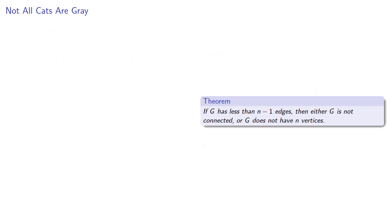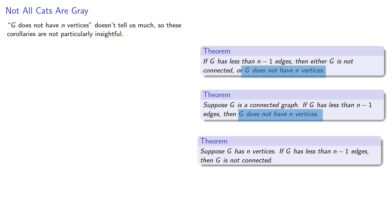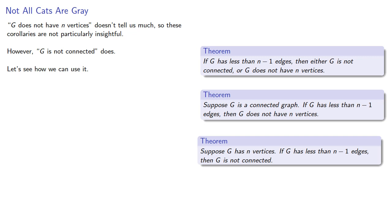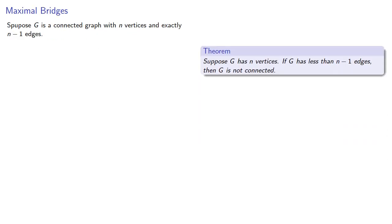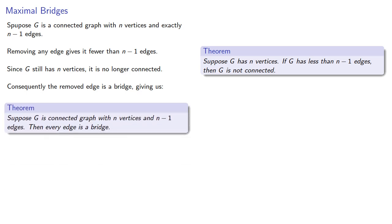While we've found three different contrapositives, they are not necessarily equally useful. In particular, just knowing that g does not have n vertices doesn't tell us much, so those corollaries are not particularly insightful. However, "g is not connected" does give us a lot of information. Suppose g is a connected graph with n vertices and exactly n-1 edges. Removing any edge gives it fewer than n-1 edges, and since g still has n vertices, it is no longer connected. Consequently, the removed edge is a bridge, giving us the result: suppose g is a connected graph with n vertices and n-1 edges, then every edge is a bridge.